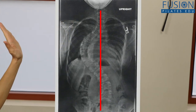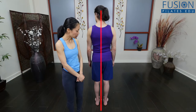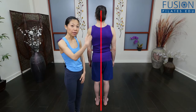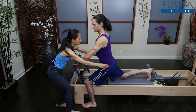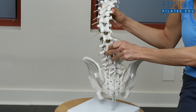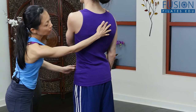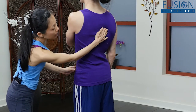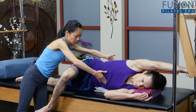Scoliosis is truly a three-dimensional distortion that must be dealt with in a comprehensive way that not only seeks to address the side flexion issues but also the torque of the spine. Join Quan Hui Chu for an in-depth exploration on how you can help your clients unravel the effects of this common condition.